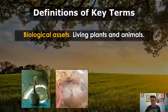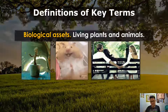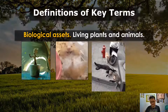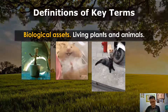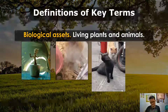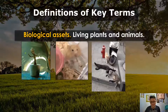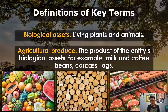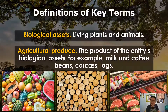Biological assets are living plants and animals. Agricultural produce is simply the product of biological assets when harvested. They could be harvested from other biological assets, or the harvest of a biological asset itself.